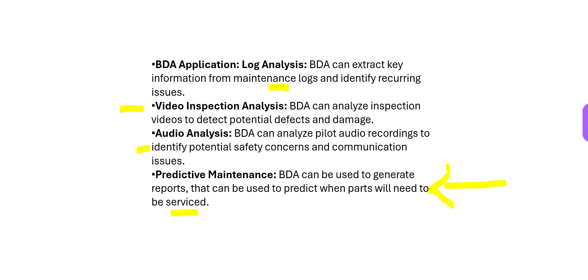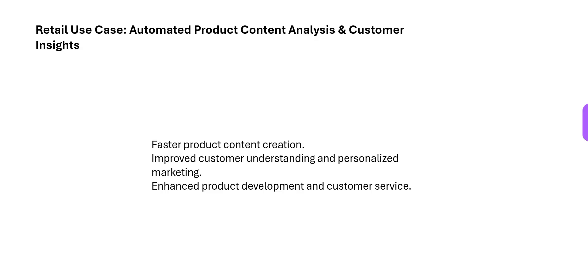You can automatically service parts before problems occur — you do not have to wait for a plane crash or a critical scenario mid-flight. Do not wait for the pilot to land and say, 'By God's grace I am safe today,' and only then realize it has been 8 months and a spare part needs replacing. Who else can use BDA? Retail companies like IKEA, Spencers, and Walmart.